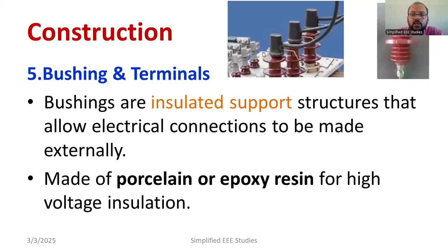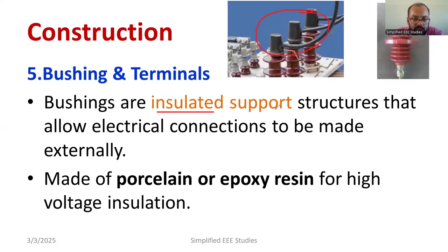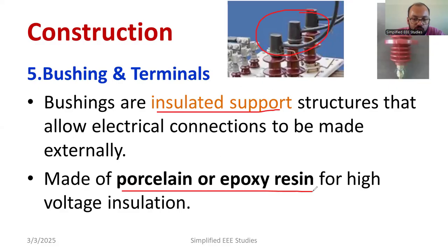If I talk about bushings, you can see them in the diagram. The bushing is the part where the connections are taken out. It provides insulated support. Usually, porcelain is the material used for insulation support.